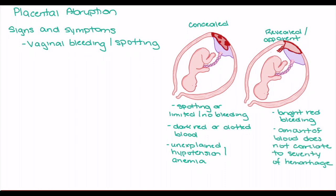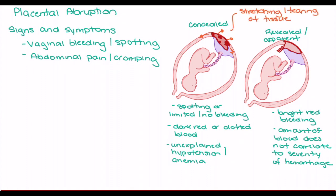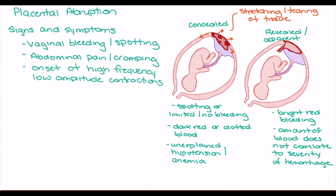It is important to note that the amount of bleeding is not necessarily correlated to the degree of the hemorrhage, as some bleeding may remain within the decidua basalis. Vaginal bleeding is most commonly associated with abdominal pain or cramping, because the accumulation of blood in the decidua basalis increases pressure on surrounding tissues, leading to stretching, tearing, and activation of nerve fibers. Stretching and tearing can also activate stretch receptors within the uterus, leading to high-frequency, low-amplitude contractions, and the uterus may become hard and tender on palpation.